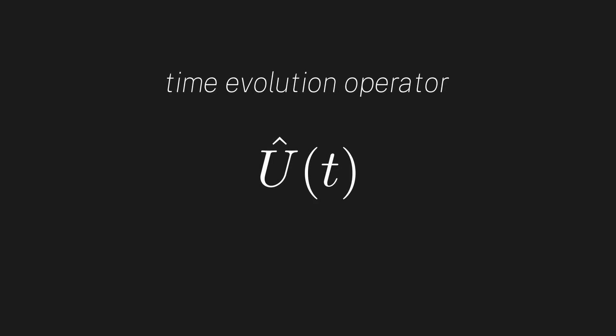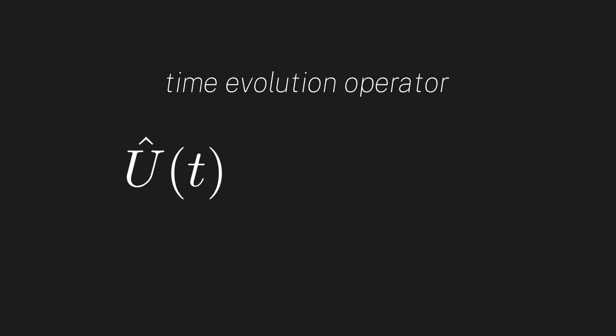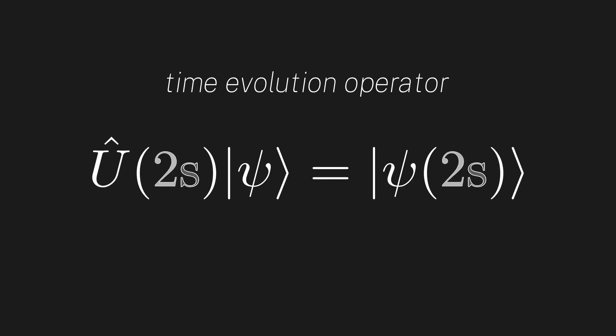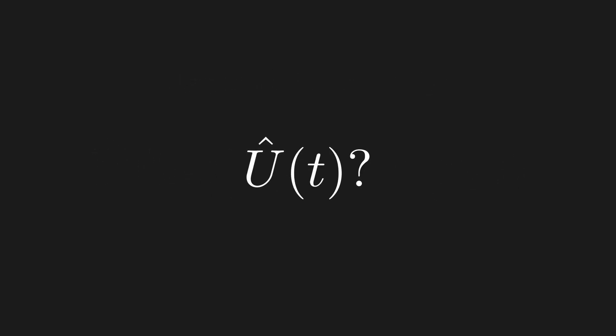To evolve and transform our quantum state in time, it seems clear that we need an operator, which we will call the time evolution operator, denoted here with a big U. This operator takes in a time t and, when acted upon an initial quantum state, will evolve that state forward by t amount of time. So U of two seconds would evolve our quantum state forward by two seconds. Before trying to figure out what this time evolution operator actually is, it's a good idea to use our physical intuition to determine some of its properties.